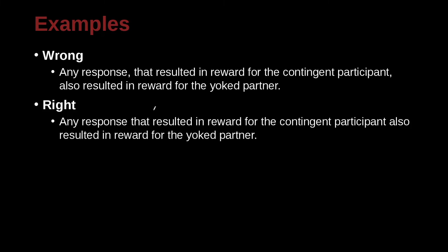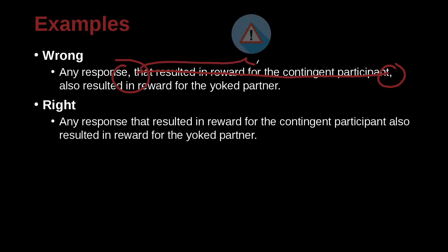'Any response that resulted in reward for the contingent participant also resulted in reward for the yoke partner.' The incorrect version inserts a comma after 'contingent participant.' Can we cut out that clause and have the sentence still carry the same meaning? The answer is no — it is specifically telling you this is a special participant with this situation. We must keep it in, which means no comma.